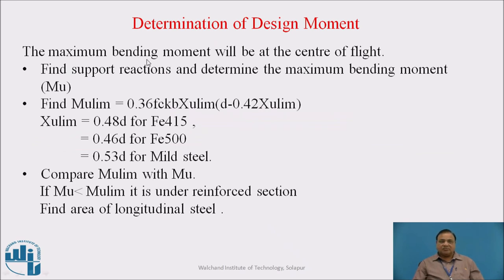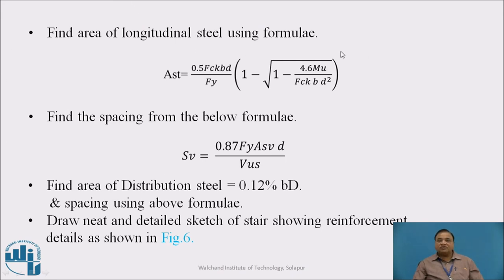Determination of maximum design bending moment. The maximum bending moment will be at the center of the flight because loading is symmetrical. Find the support reactions first, then find MU limit: it is 0.36 × fck × b × Xu,limit × (d − 0.42 × Xu,limit). Xu,limit equals 0.48d for Fe 415, 0.46d for Fe 500, and 0.53d for mild steel. Compare MU,limit with MU. If MU is less than MU,limit, it is an under-reinforced section. Find the area of longitudinal steel: Ast = 0.5 × fck × b × d / fy × (1 − √(1 − 4.6 Mu / (fck × b × d²))). Also find the area of distribution steel, which is 0.12% of b × d, and determine spacing using the appropriate formula.